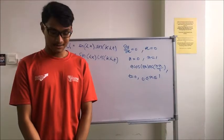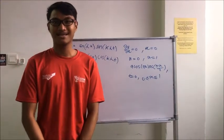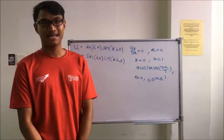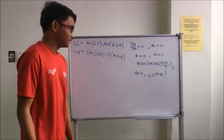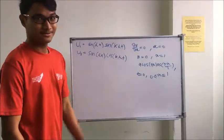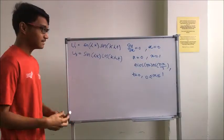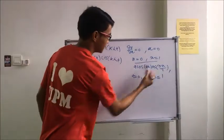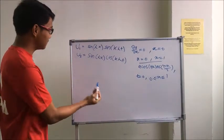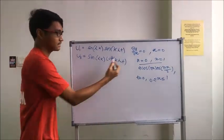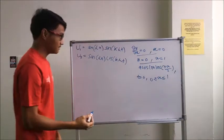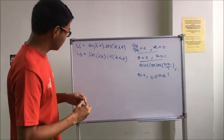Assalamualaikum warahmatullahi wabarakatuh. My name is Muhammad Haziq bin Muhammad Zaki. My metric number is 192598. So thank you for Chip for presenting this now. Okay, so now we will continue what Chip has explained. We will now use the second condition. From the first condition, we know that u1 and u3 are the ones that satisfy the first condition.